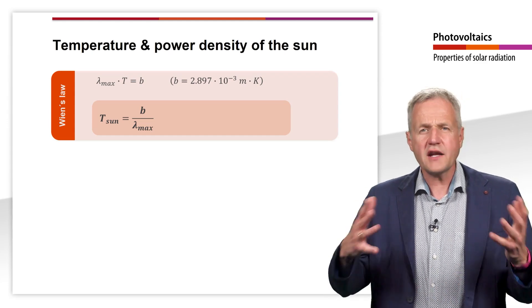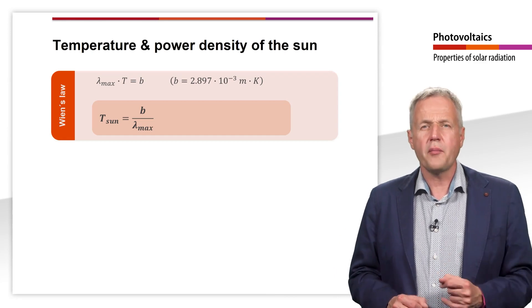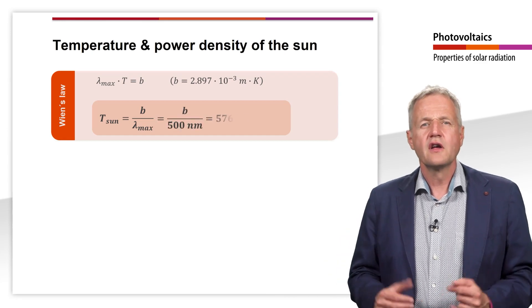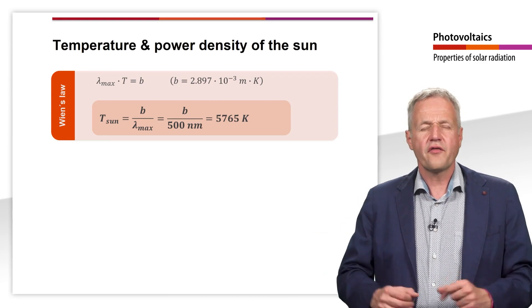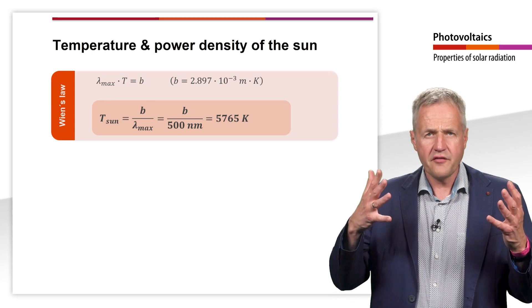Our sun has its maximum intensity at a wavelength of about 500 nanometer. With this, we can now calculate the surface temperature of the sun. It is about 5765 Kelvin.